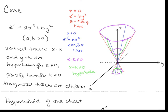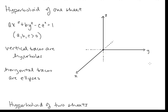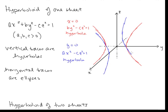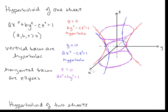Now let's look at the hyperboloid of one sheet. The equation is of the form ax² plus by² minus cz² equals 1, where a, b, and c are positive. We notice vertical traces are hyperbolas and horizontal traces are ellipses. With x equals 0, we have a hyperbola in the yz plane. With y equals 0, we have ax² minus cz² equals 1 — a hyperbola in the xz plane (the blue one). With z equals 0 or z equals a constant, we get ellipses. That's our hyperboloid of one sheet.